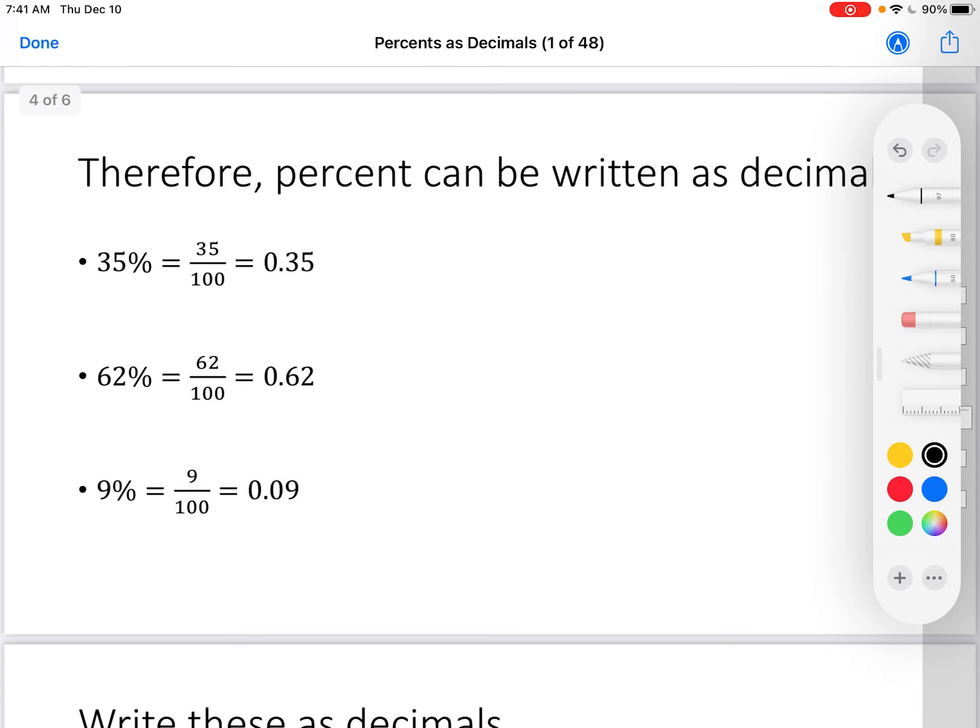Which means it should be very easy to write percent as a decimal. Since 35% is 35 over 100, that makes it 0.35 with the 5 in the hundredths place. 62% is 62 over 100 is 0.62 with the 2 in the hundredths place. 9% is 9 out of 100 is 0.09 with the 9 in the hundredths place. Notice again that 0 in the hundredths place.